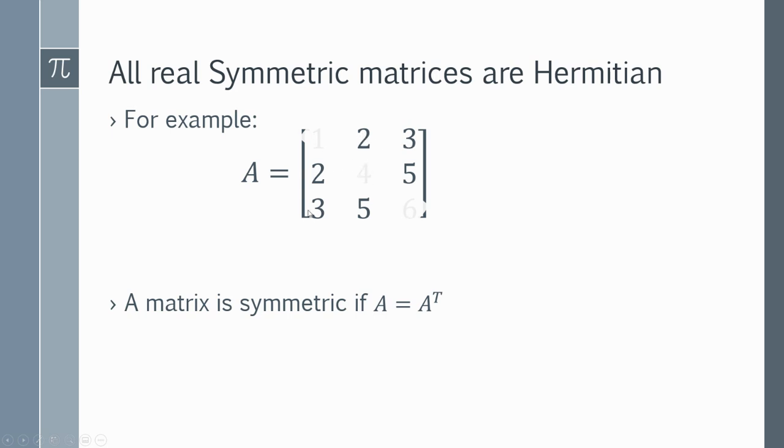...you can see the 2 and 2, the 3 and the 3, the 5 and the 5. It's symmetrical about its leading diagonal. So we've got a symmetric matrix.